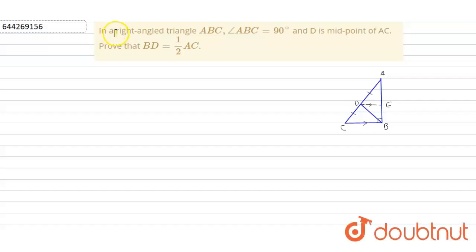Hello everyone, this is our question. In a right angle triangle ABC, angle ABC is equal to 90 degrees and D is midpoint of AC. Prove that BD is equal to half of AC.